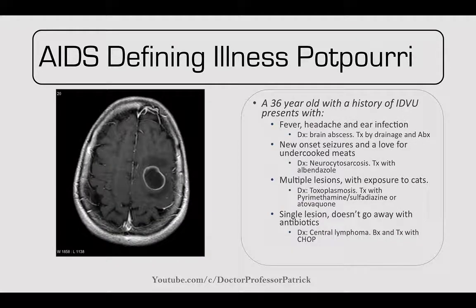More AIDS-defining illnesses: the same patient has fever, headache, and an ear infection. On head CT, a single ring-enhancing lesion could signify a brain abscess — treat by drainage and antibiotics. If there's a new onset seizure and the patient ate undercooked meats, think of neurocysticercosis and treat with albendazole. It comes from undercooked pork.